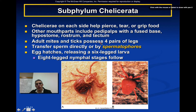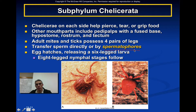Adult mites and ticks possess four pairs of legs, just like spiders and scorpions. They transfer sperm directly to their mate or use spermatophores — packets of sperm. The egg hatches releasing a six-legged larval form, and eight-legged nymphal stages follow after this, so there is a clear difference between the newly hatched larva and later developmental stages.